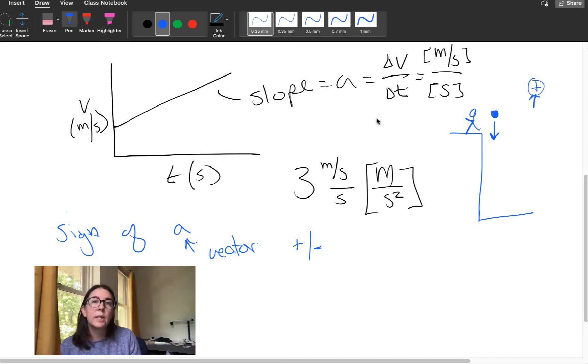So if up is positive, then this object is speeding up in the downward direction, or it's speeding up in the negative direction. The direction it's speeding up in is the acceleration. So our acceleration is in the negative direction, even though our velocity is getting faster. The velocity is getting bigger in the negative direction.